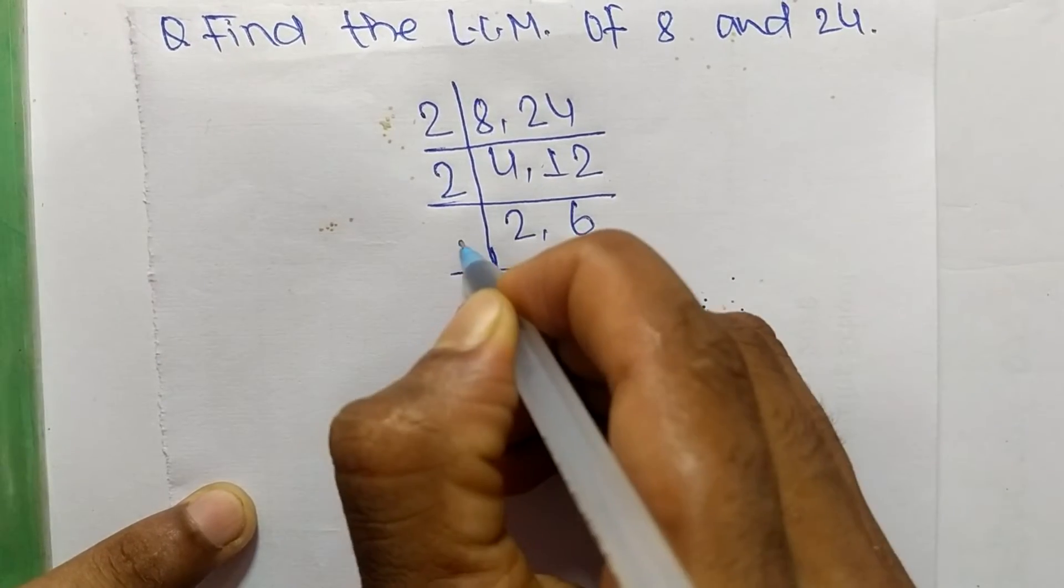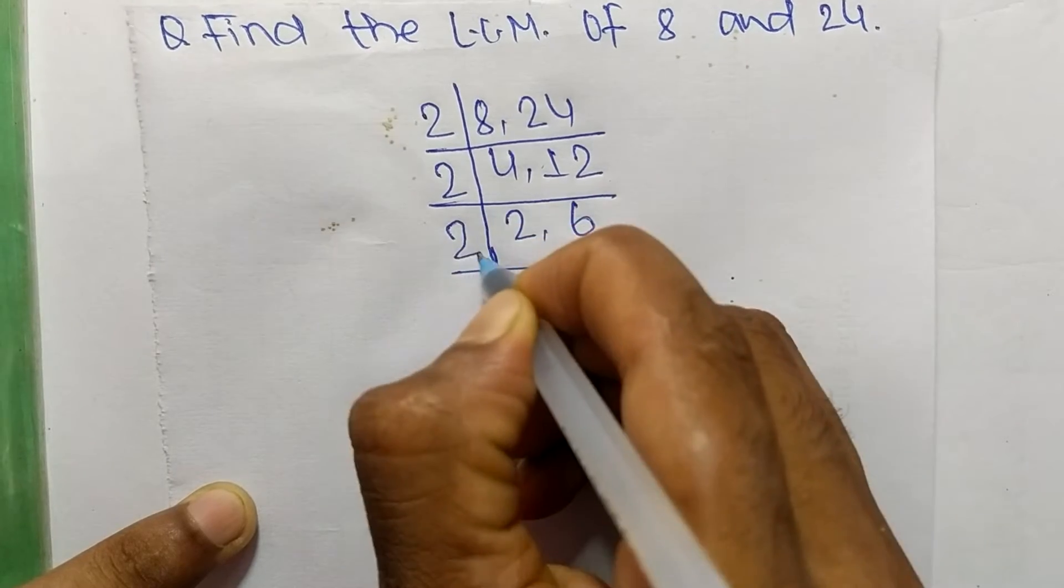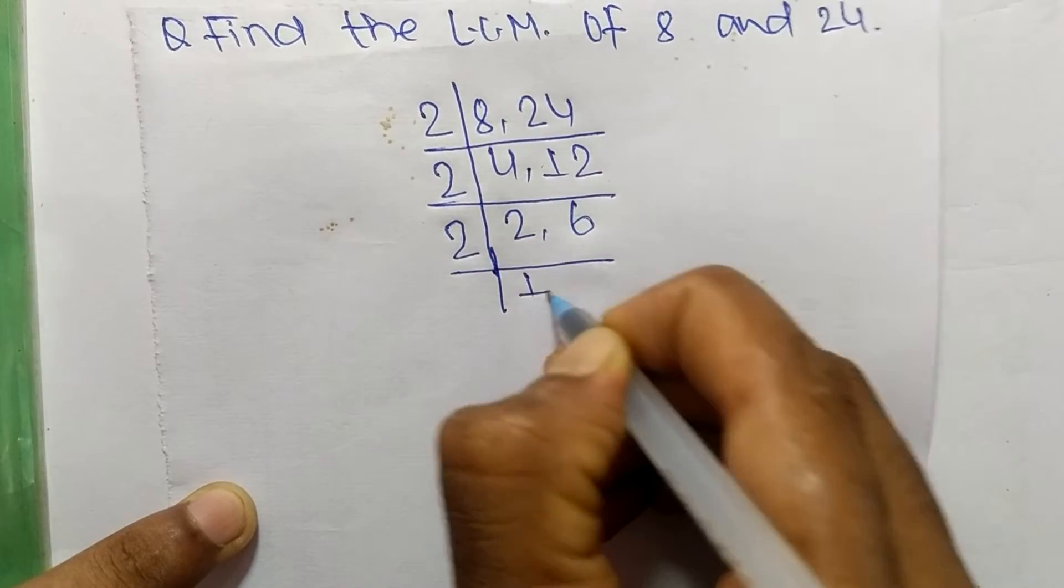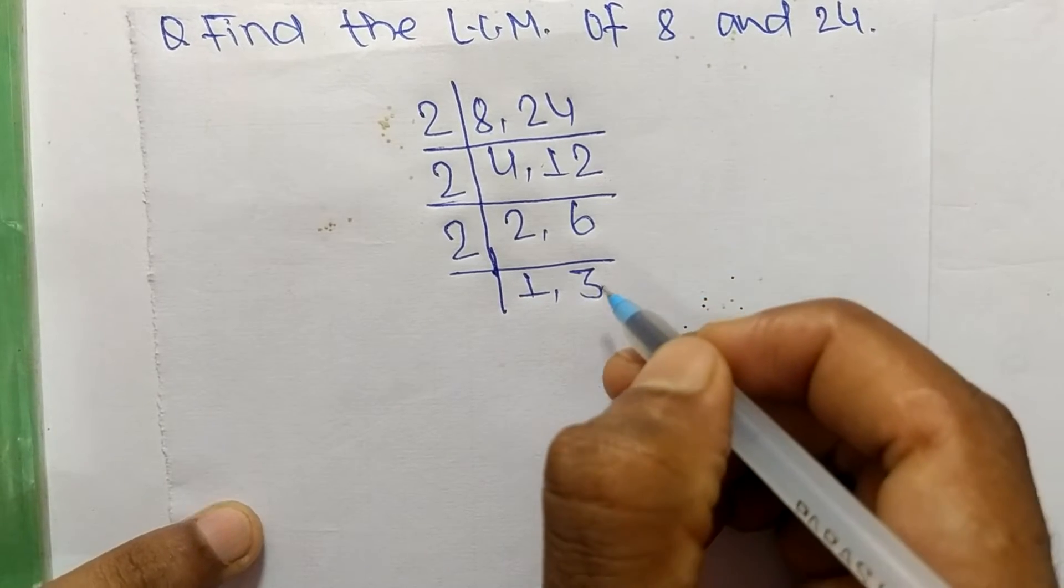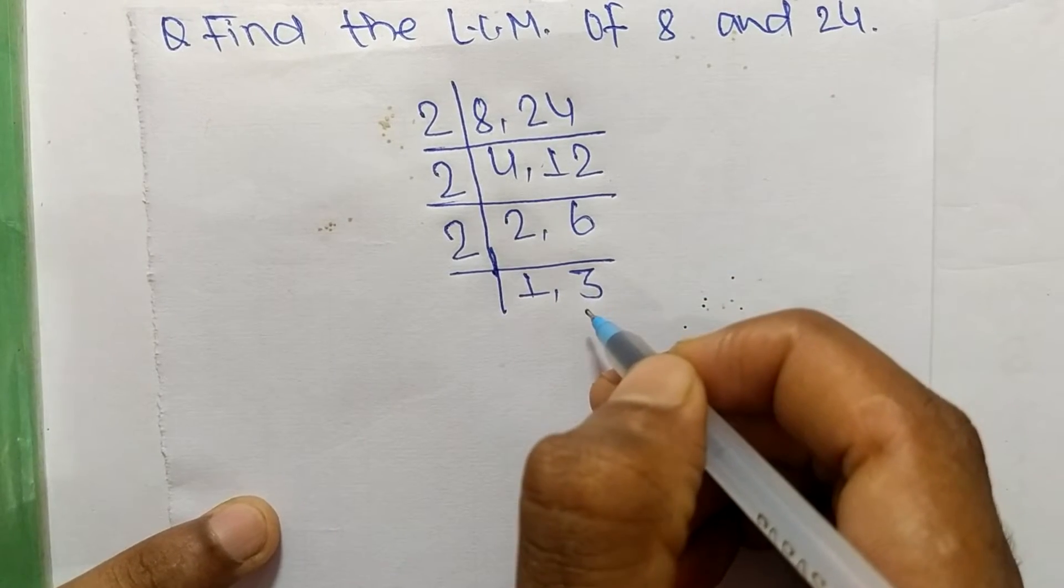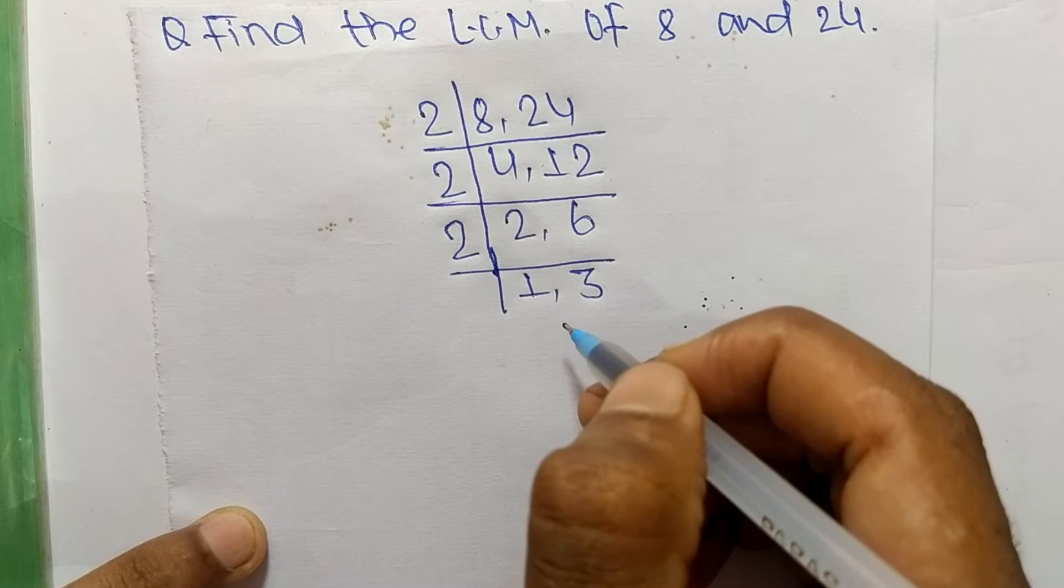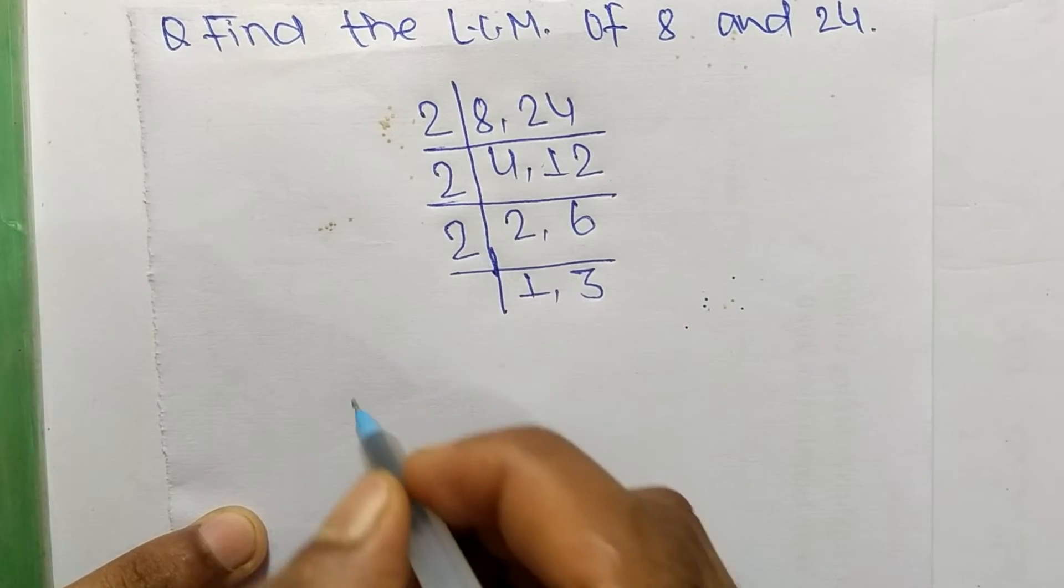Now 2 can again divide both numbers, so we again take 2. 2 times 1 means 2, and 2 times 3 means 6. Now we get 1 and 3, which are not exactly divisible by the same number.